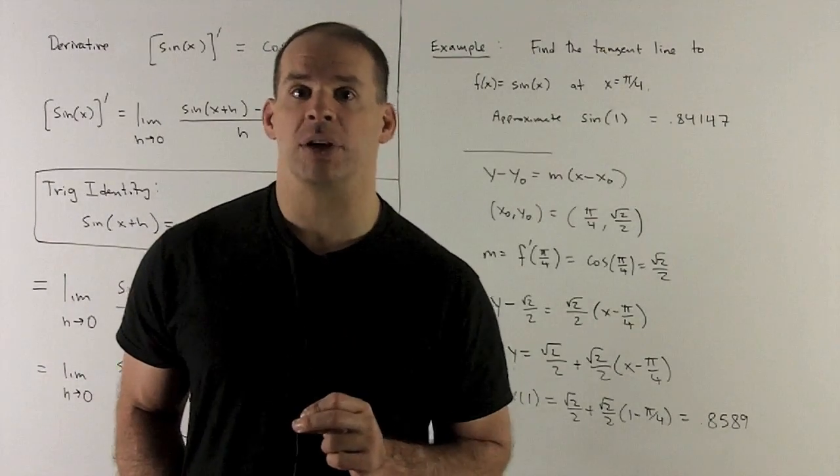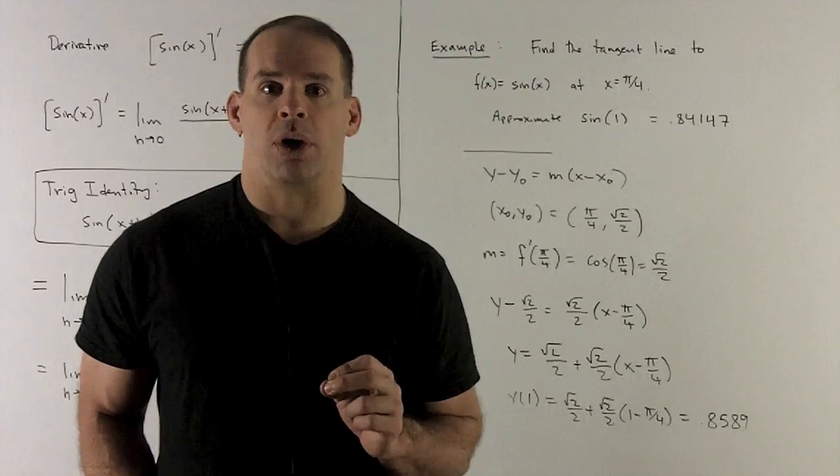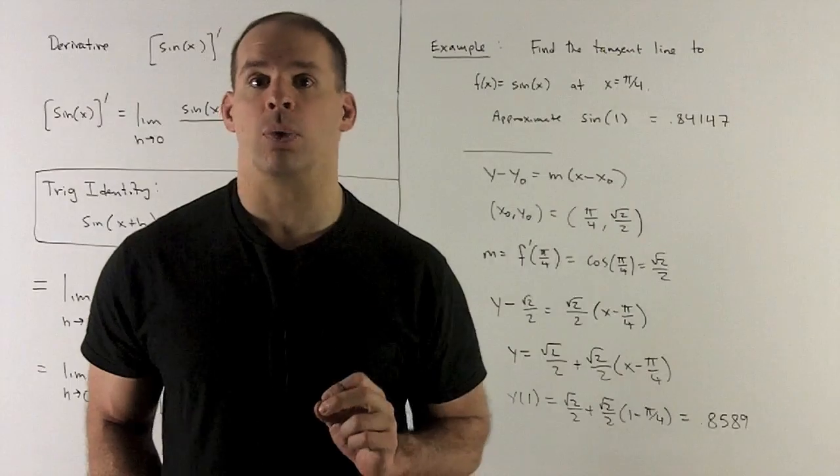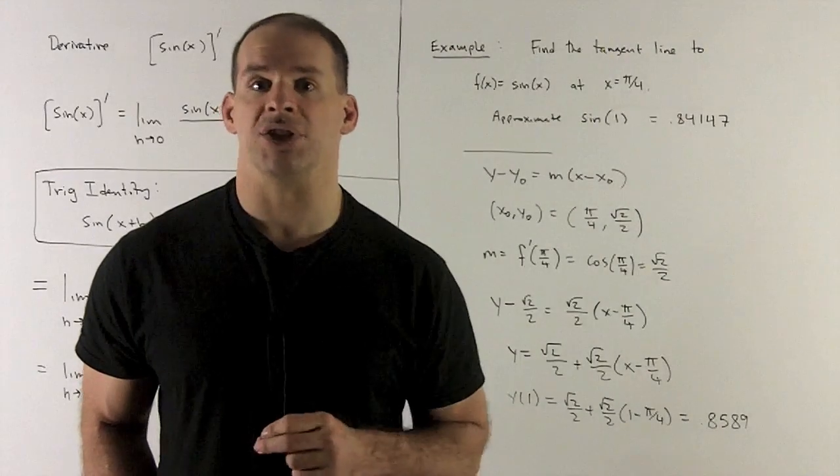So the equation of my line is going to be y minus square root of 2 over 2 is equal to square root of 2 over 2 times x minus pi over 4. That's our tangent line.